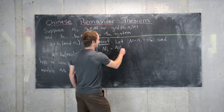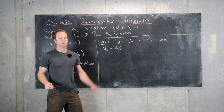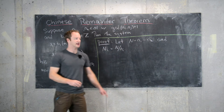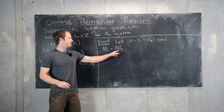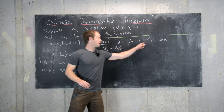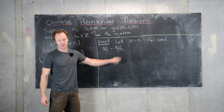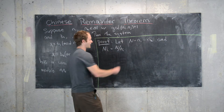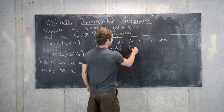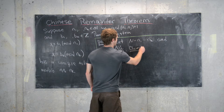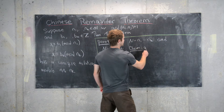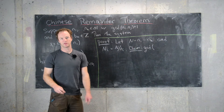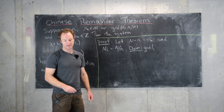And let capital N_i be the product of all of the n's except for n_i. In other words, N_i = N / n_i, the product of all the n_j for j not equal to i. Now we make the claim that the GCD of capital N_i and little n_i is 1.